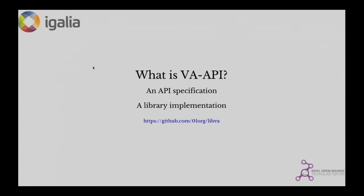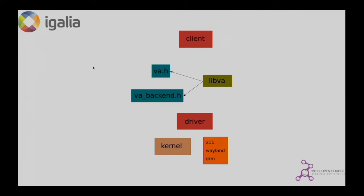What is VAPI? It's an API specification and also a library implementation. All this is on GitHub in the OpenOffice technical officer repository. You can make pull requests, open issues, and star it. Basically, VAPI is a library linked to your client or to your driver. For the client side, it exposes an API in VA.h, and on the driver side, it exposes a header file VA backend.